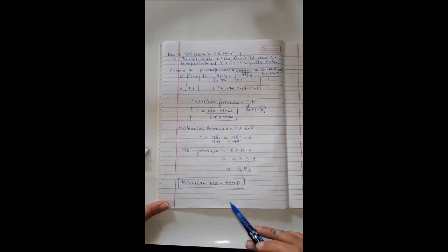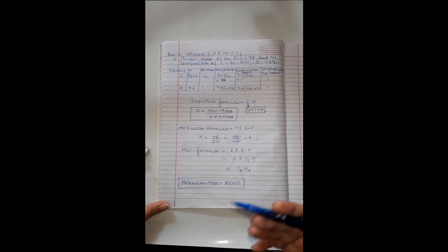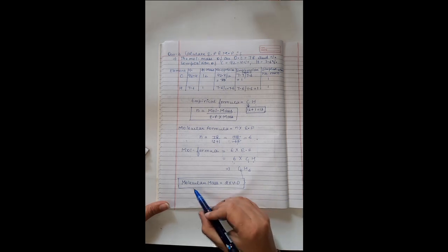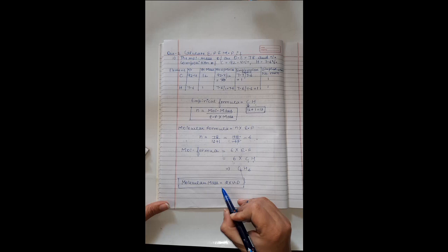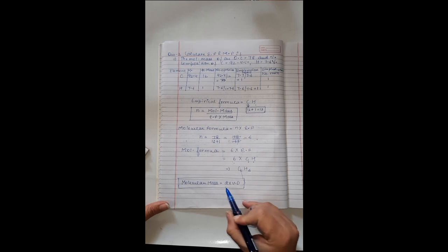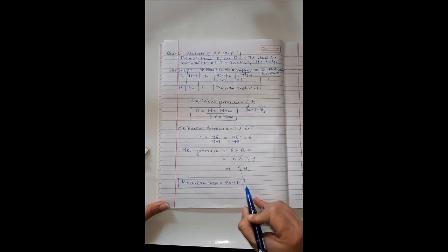Sometimes in a question, vapor density is given instead of molecular mass. In that case, we can calculate molecular mass using the formula: molecular mass equals 2 × vapor density. That's all for today. Have a nice day ahead.